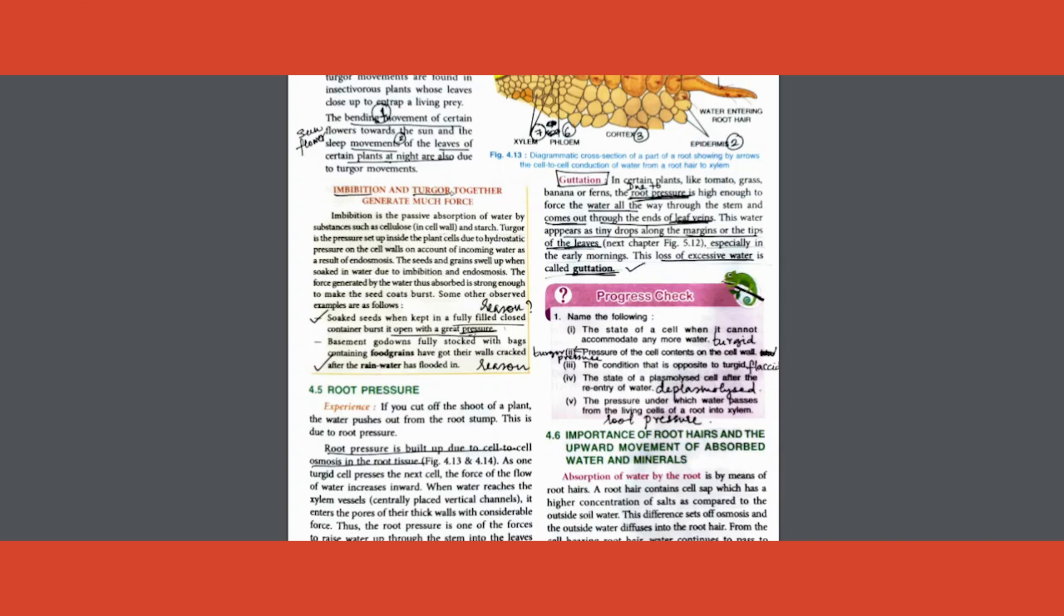One more question: basement godown fully stocked with bags of food grains have got their walls cracked after the rainy season. What happens during rainy season? The moisture is easily absorbed by the cells of the plant. What are the cells of the plant here? The food grains. Because of imbibition and the turgor it develops - what is turgor? The fully distended state of the cell because of absorption of water. Because of these two reasons, the food grains are getting so much turgor pressure that it can even break walls.